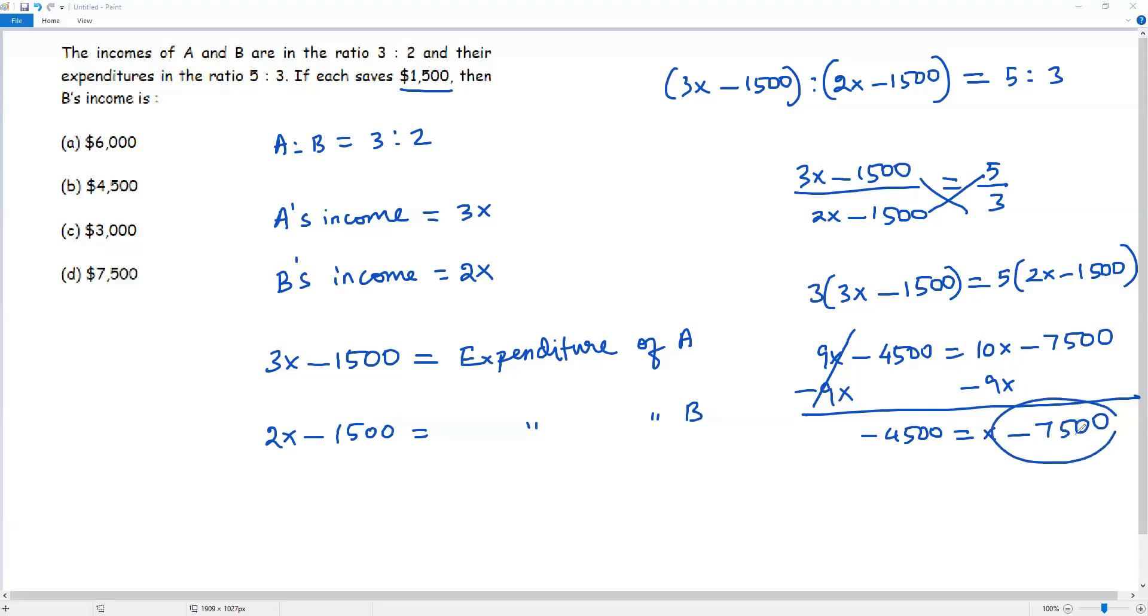To isolate x, I have to get rid of this negative 7500. For that, I'm adding 7500 to both sides. These will cancel out. When I simplify -4500 and positive 7500, it will be positive 3000. On the right side we just have x. So I got the value of x, that is 3000.